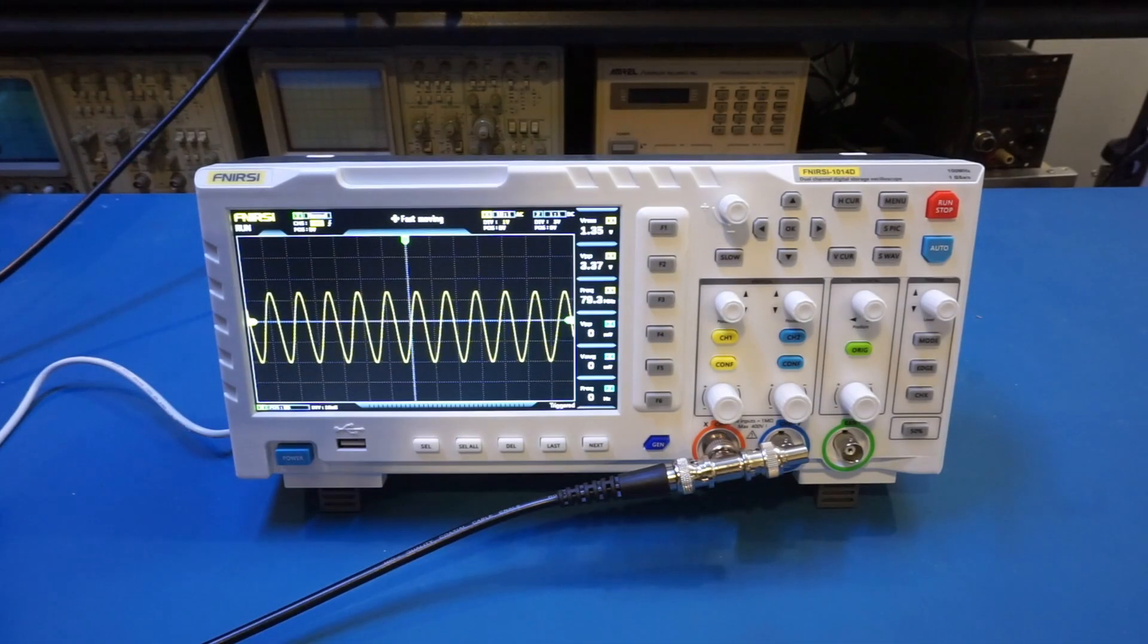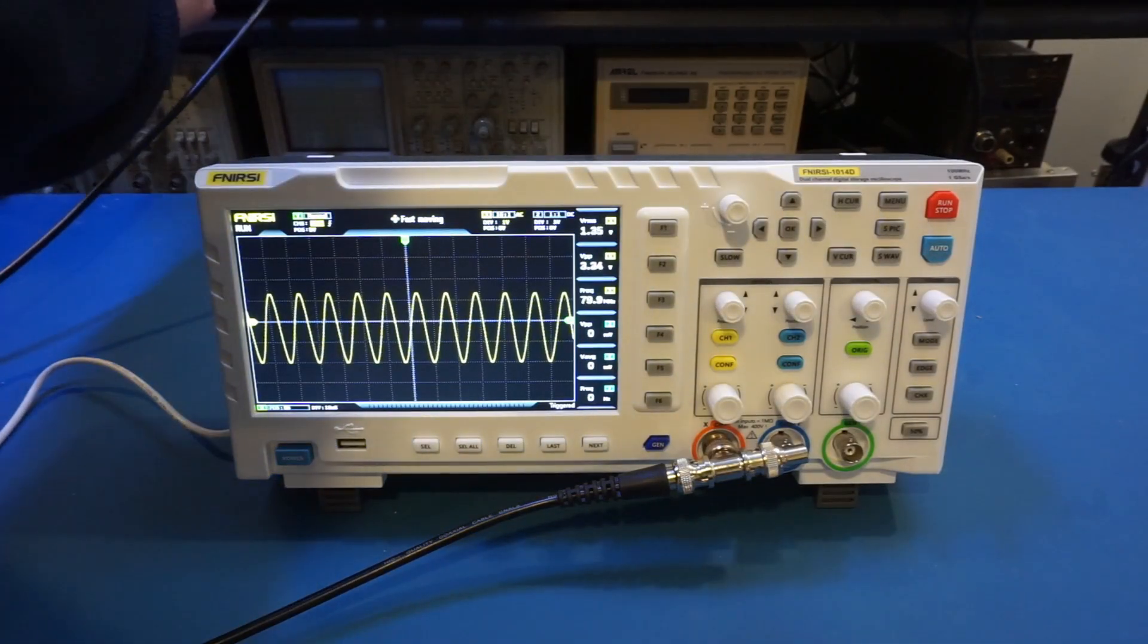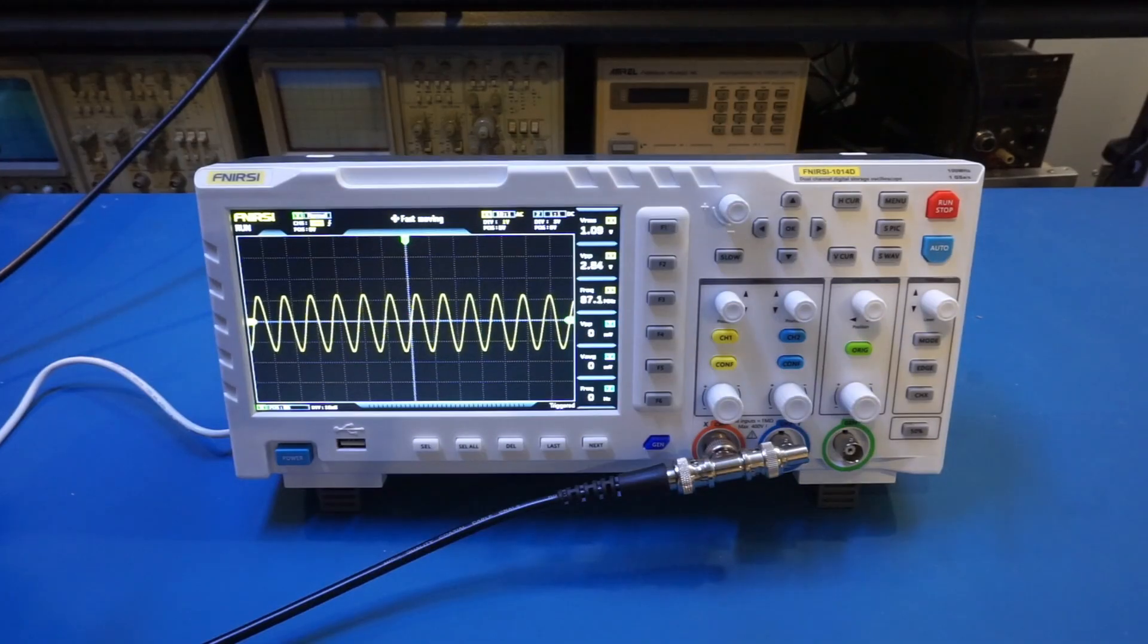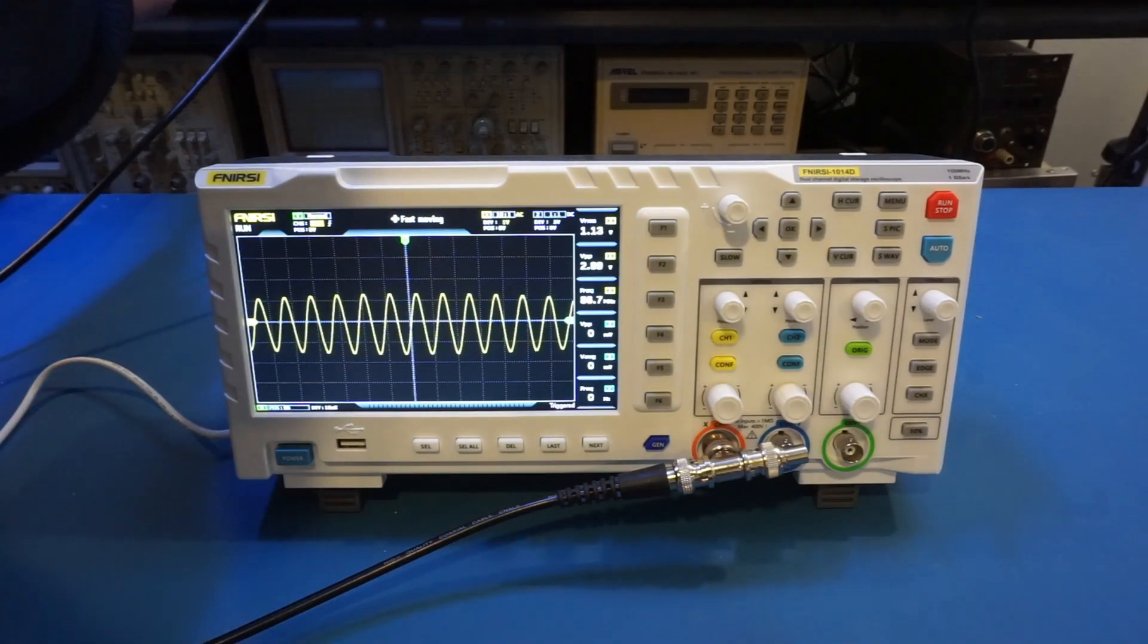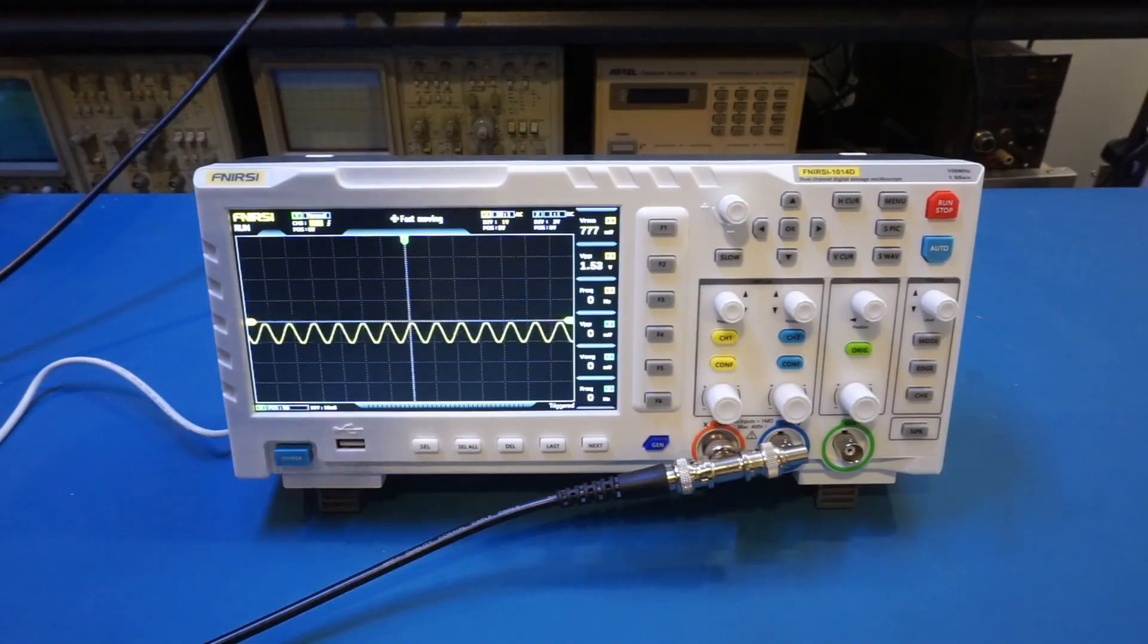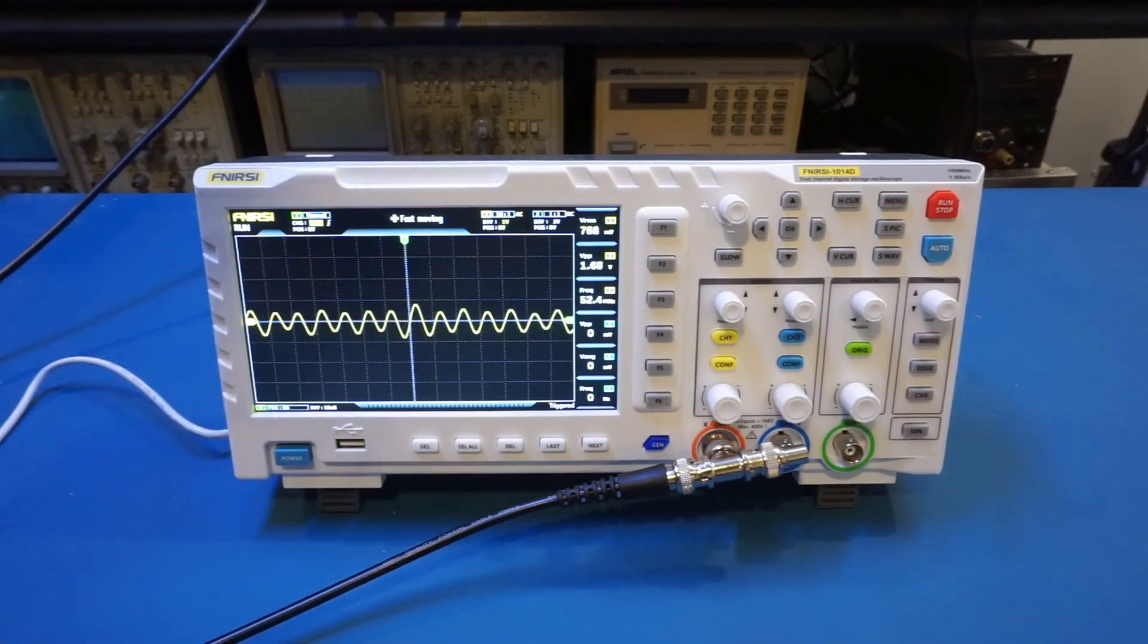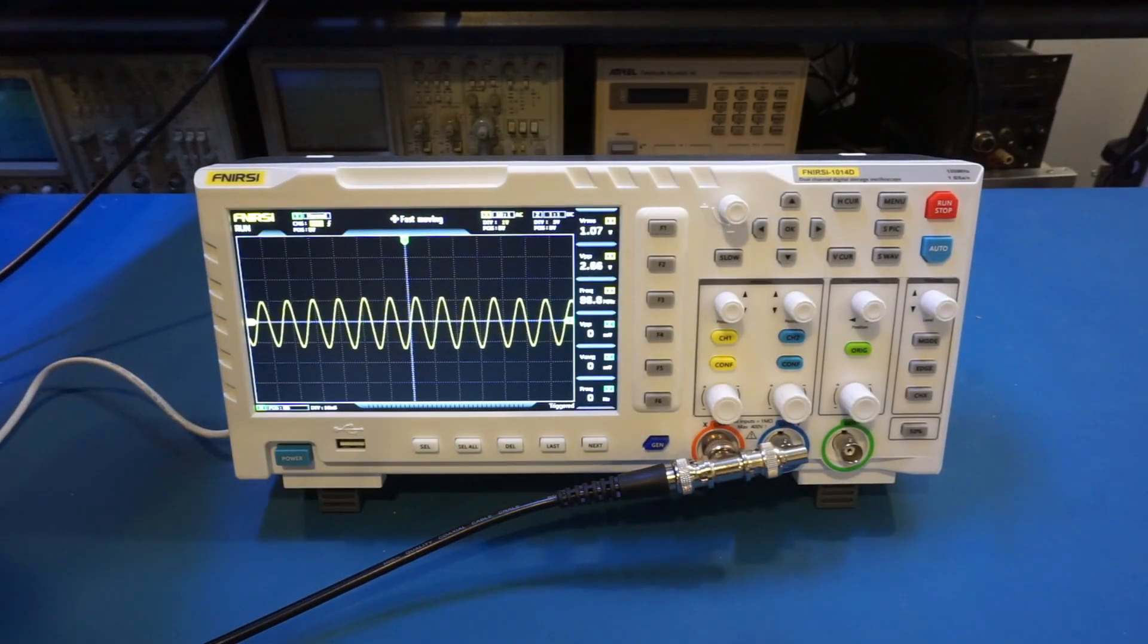And right now at 80 megahertz, you can see that we dropped even further to just above 3.2 volts. And let's go to 90, and we dropped below 3 volts. So let's change it to 100 megahertz. And you can see that we are not able to even display the 100 megahertz signal here. So let's change it back to 90 megahertz.